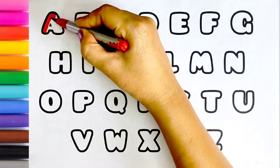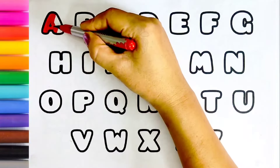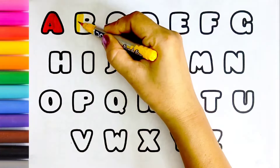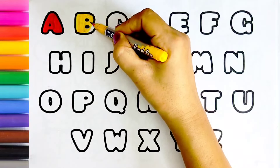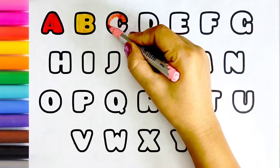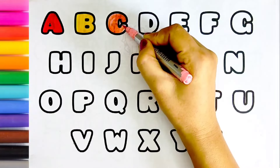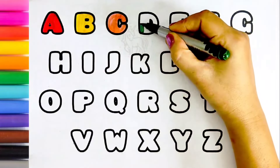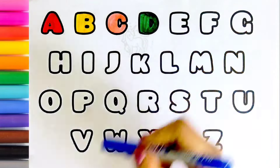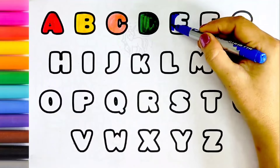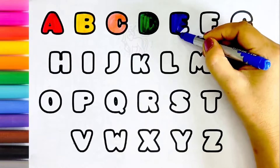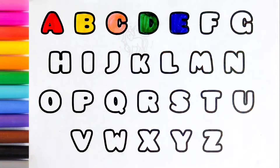Red color. A. A for apple. Yellow color. B. B for baby. Peace pink color. C. C for cat. Dark green color. D. D for dog. Blue color. E. E for elephant. Orange color.